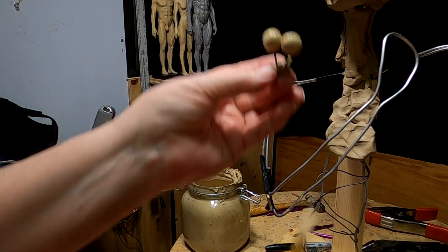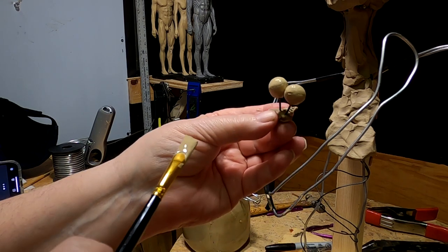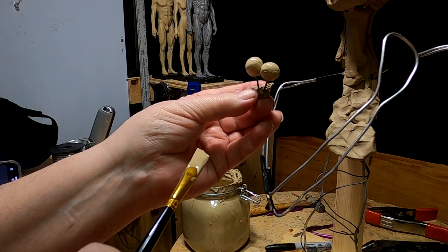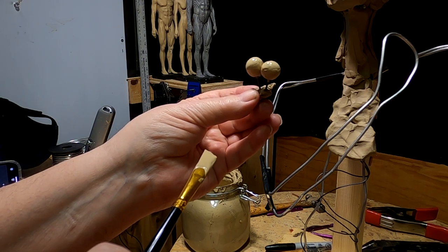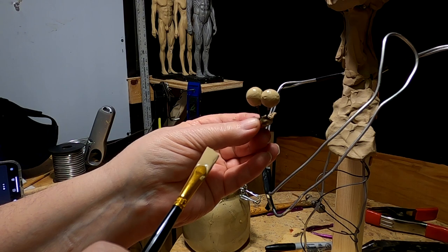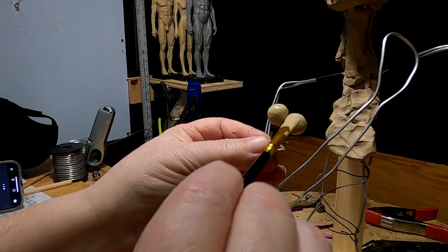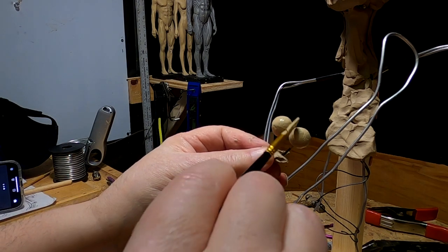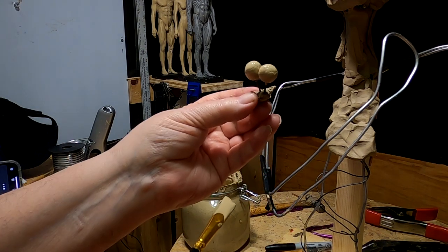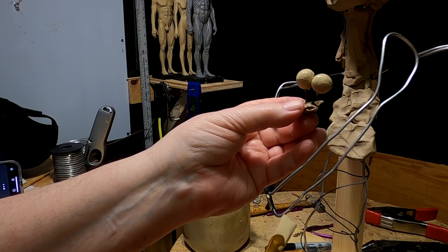The reason I'm using this self-hardening clay is because I want to be able to work around the eyeball without damaging the eyeball itself. It's much easier to do that if the eyeball is made of a material that is rock hard. I'm going to set these aside.